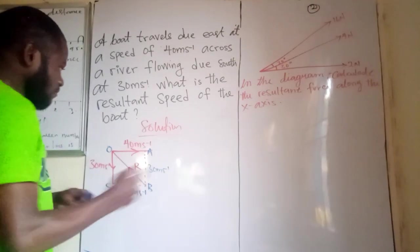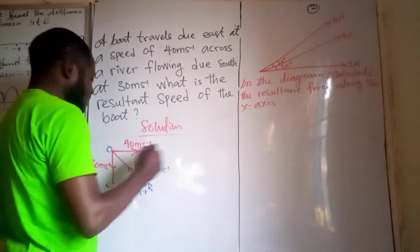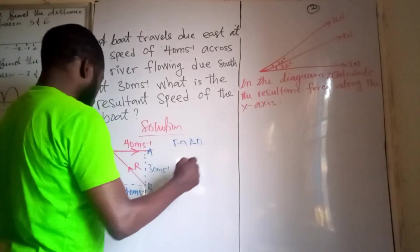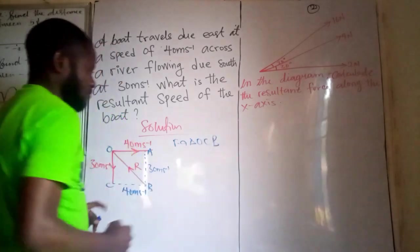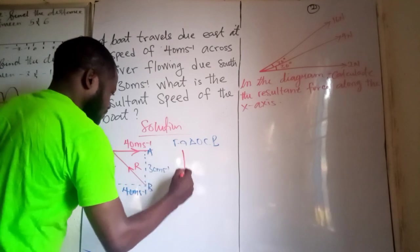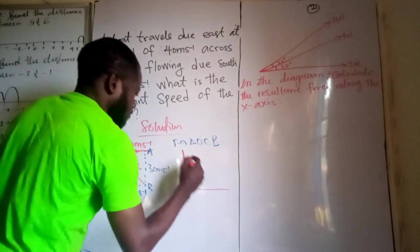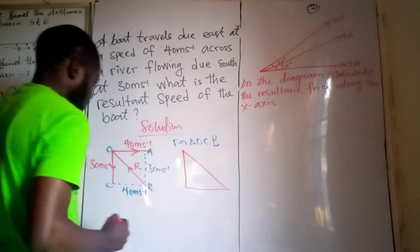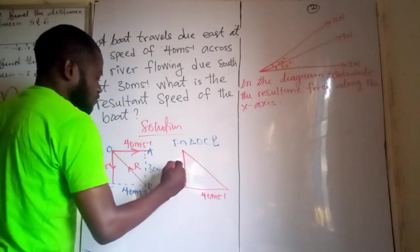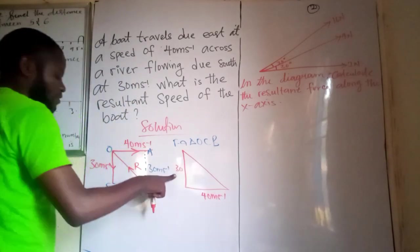So if I consider right angle triangle O, C, B. So if I have that, I'm going to have this to look like this. So here will be 40 meters per second. And here will be 30 meters per second as well.